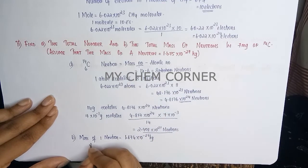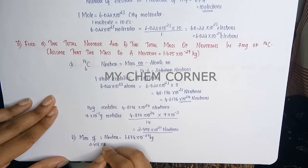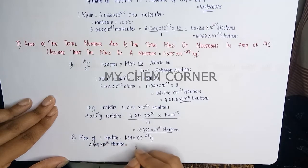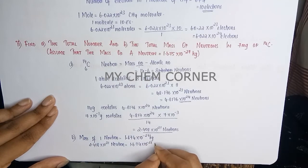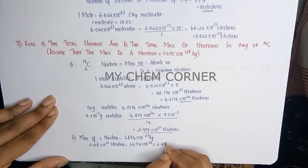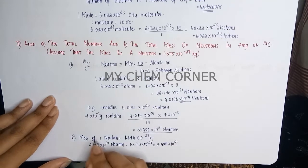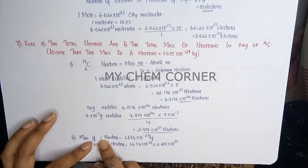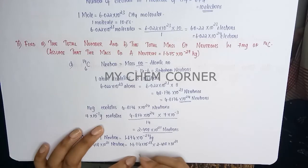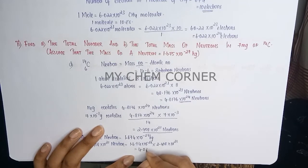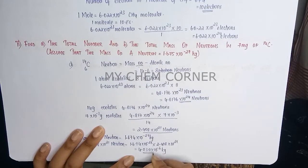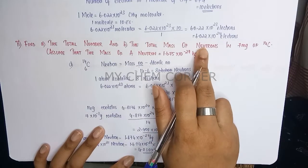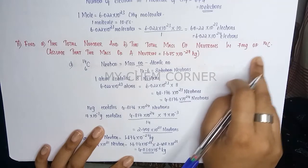Again unitary method: this will be cross multiply, so this will be 1.674 times 10 to the power minus 27 times 2.408 times 10 to the power 21 divided by 1. When we find this out, this will be 4.030 times 10 to the power minus 6 kilograms. So this is going to be the mass of neutrons in 7 grams of carbon-14 isotope.